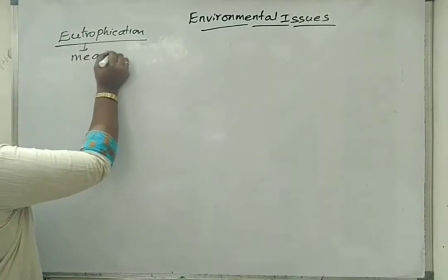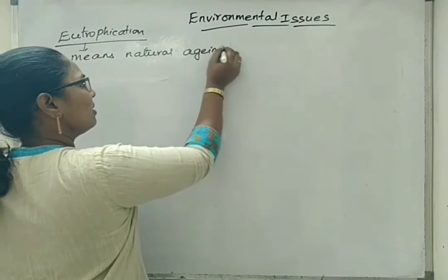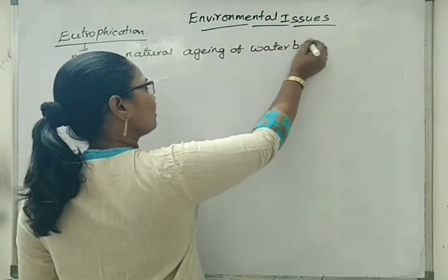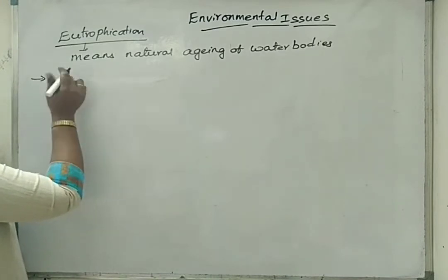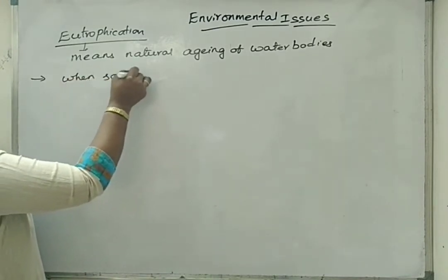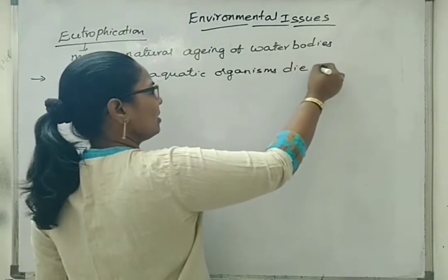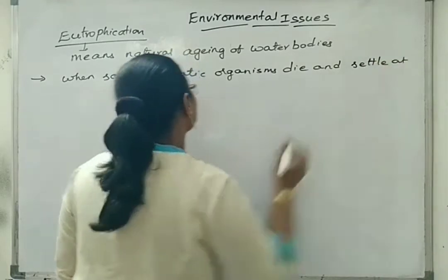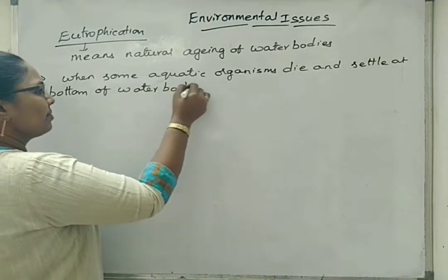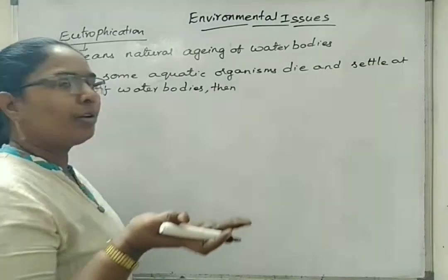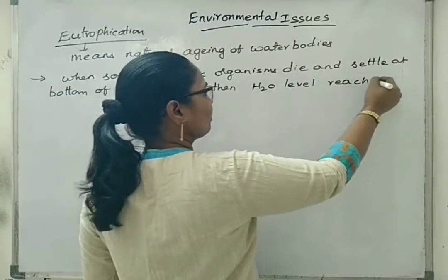Eutrophication means natural aging of water bodies. When some aquatic organisms die and settle at the bottom of water bodies, the level of the water will become shallower — the water level reaches shallow.